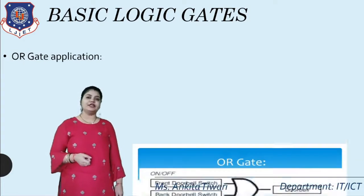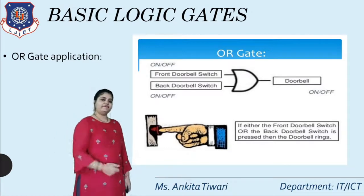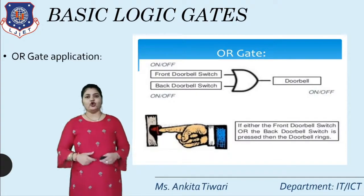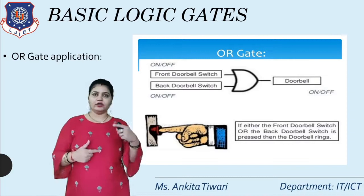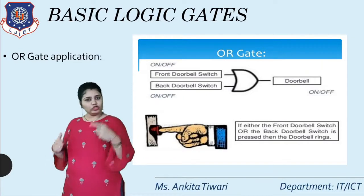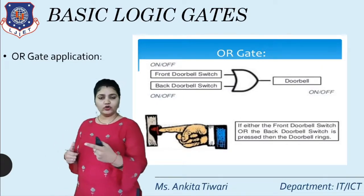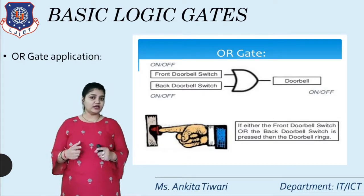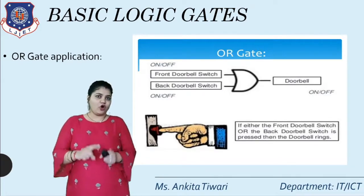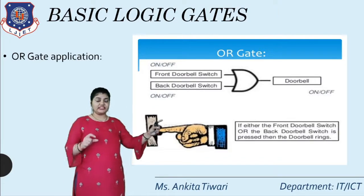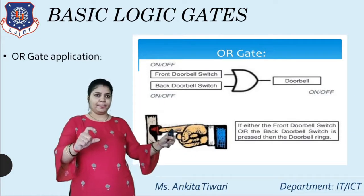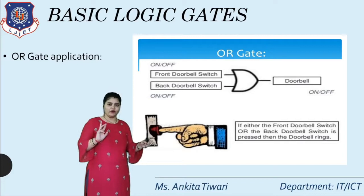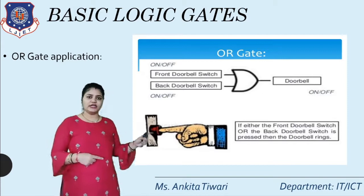The application of OR gate in daily life is a doorbell. If there are two doorbells — one at the front and one at the back — whenever any one doorbell is pressed, the bell should ring. The front doorbell switch OR the back doorbell switch: if any one is ON, the doorbell will ring. Only if both are OFF will the doorbell be off. This is the OR gate concept.